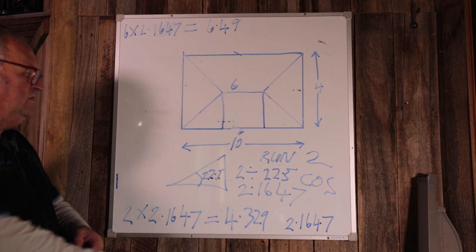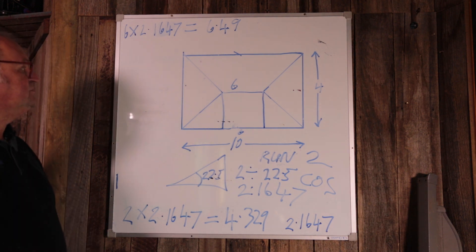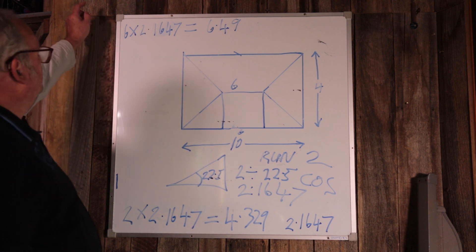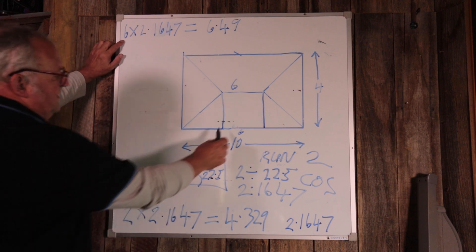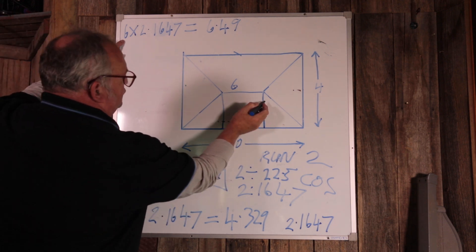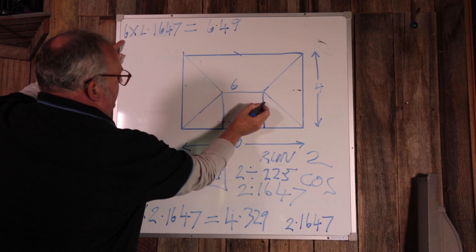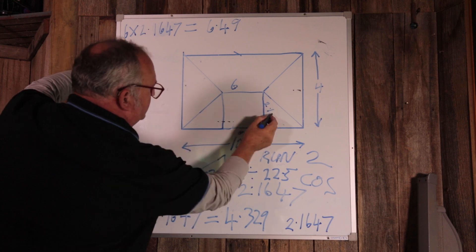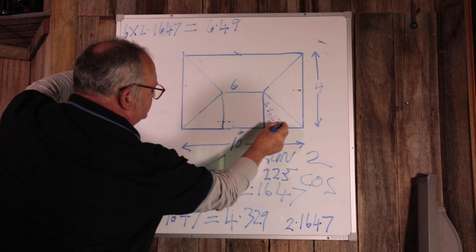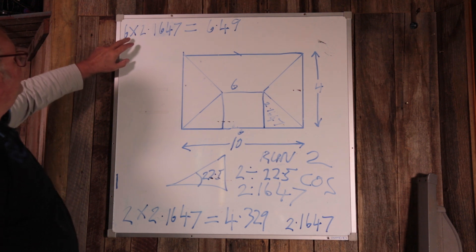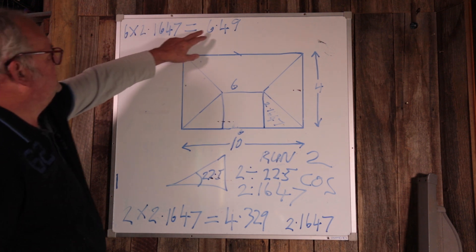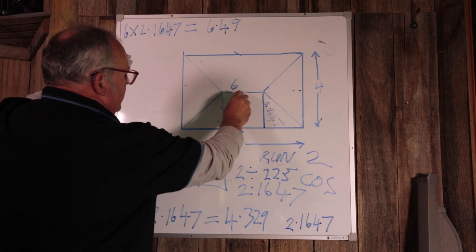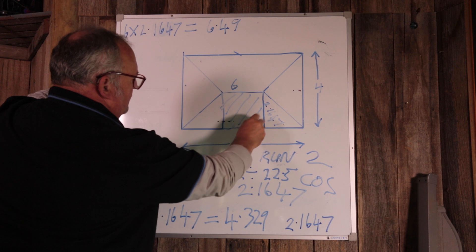So on the slope it is 2.1647 meters. So when we go to work it out, we go 6 meters, which is this length, and this will be on the slope here. So this one here is 2.1647, so we go 6 times 2.16, so that gives me 6.49 square meters in here for that rectangle there.